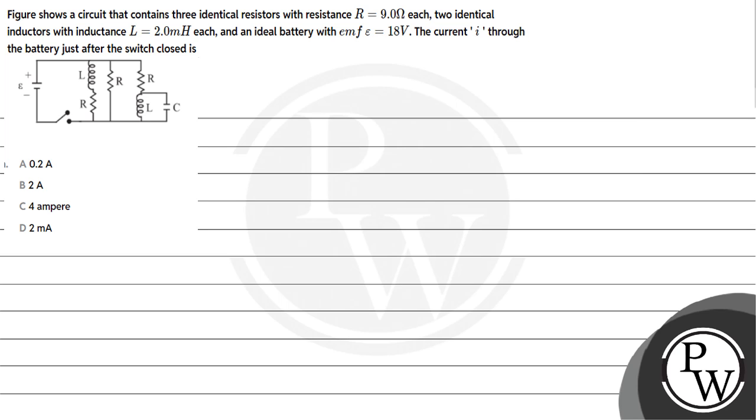Let's read the question. The figure shows a circuit that contains three identical resistors with resistance R equals 9 ohms each, two identical inductors with inductance L equals 2 millihenry each, and an ideal battery with EMF equals 18 volts. The current I through the battery just after the switch closed is... so our key concept is: